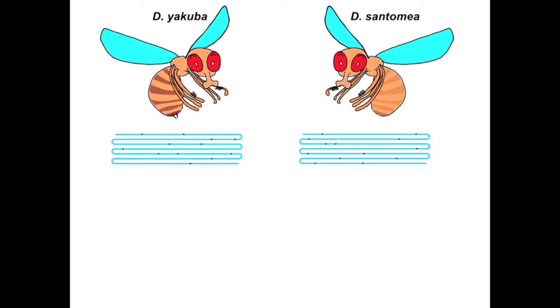Now, Drosophila yakuba and other species have two sensory bristles on a particular region of their genitals, whereas Drosophila santomea has none.